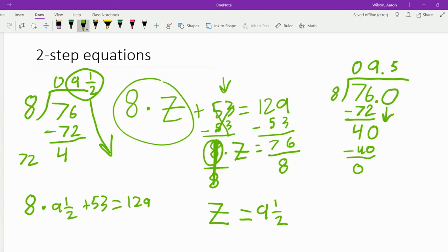So 4 8ths is 4, like the number 4. So 72 plus 4 is 76. Now all we have to do is add 76 and 53. So we got that right there. 129.